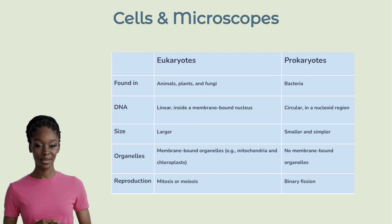These cells are large, more complex and contain membrane-bound organelles, such as mitochondria and chloroplasts. Eukaryotes reproduce by mitosis or meiosis.